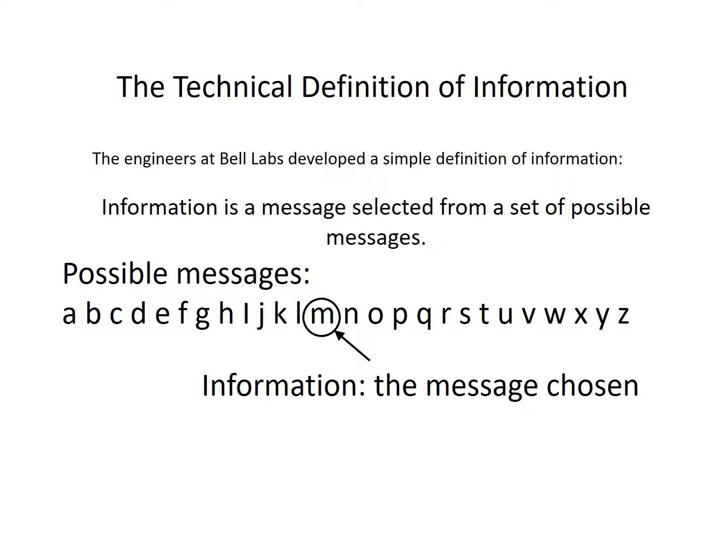The engineers at Bell Labs developed a simple definition of information. Information is a message selected from a set of possible messages. For example, if we have a number of possible messages — such as the alphabet — and we pick one of those messages, say the letter M, then that is information. It is the message chosen.